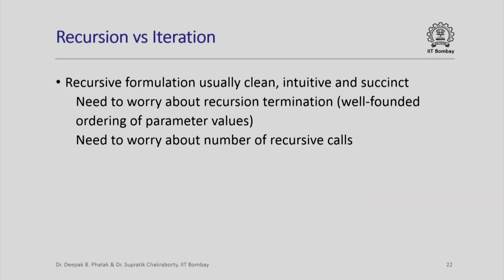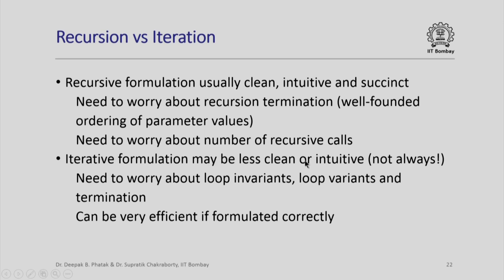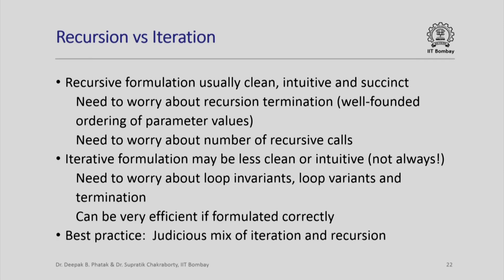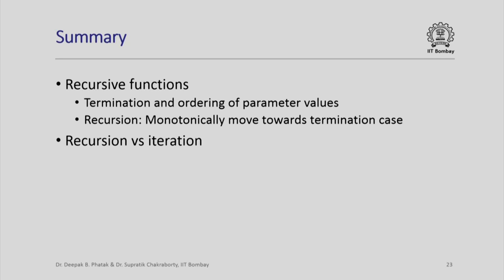Now that we have seen the same solution using both recursion and iteration, which is better? The recursive formulation is usually clean, intuitive, and succinct, but you have to worry about recursion termination, the well-founded ordering of parameter values, and how many recursive calls are being made. The iterative formulation may be less clean or intuitive — though not always — but you need to worry about loop invariants, loop variance, and termination of the loop, and if formulated properly, it can be very efficient. The best practice is to use a judicious mix of iteration and recursion. In summary, we looked at recursive functions, their termination, the ordering of parameter values to ensure termination, how recursive calls should monotonically move along this order towards the termination case, and a brief comparison of recursion versus iteration.